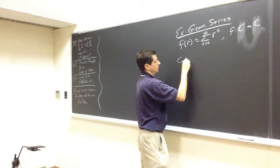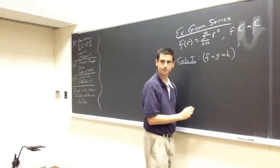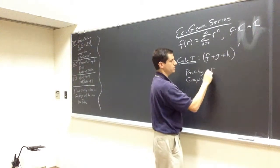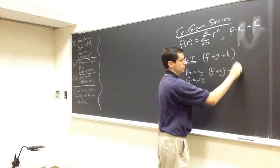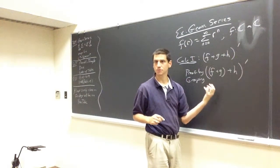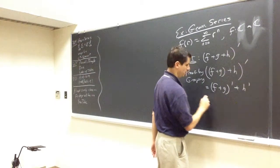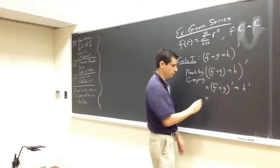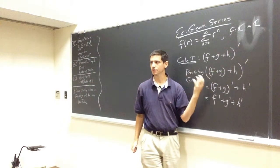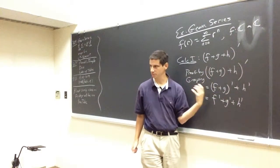In calc 1, if you have f plus g plus h and want the derivative, this is a proof by grouping or parentheses. You write (f plus g plus h) prime. I already know the derivative of a sum of two terms is the sum of the derivatives, so this is just (f plus g) prime plus h prime. And now this is just two things, so it's f prime plus g prime plus h prime.